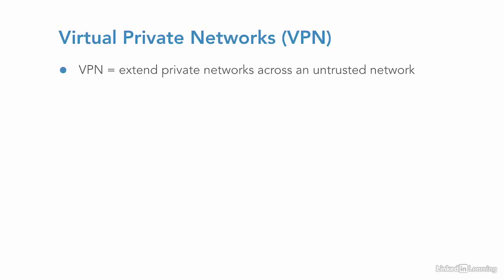Virtual Private Networks extend private networks across an untrusted network, usually the Internet. This can be used for secure communications between offices to share files, voice traffic, or really anything that can be transported over TCP/IP.